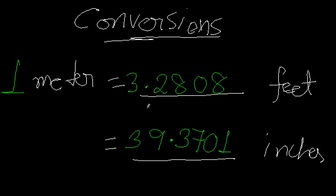So if it is 5 meters equals how many feet, I will multiply 5 with 3.2808. Or 5 meters equals how many inches, that will be 5 into 39.3701 inches, that much inches it will come.